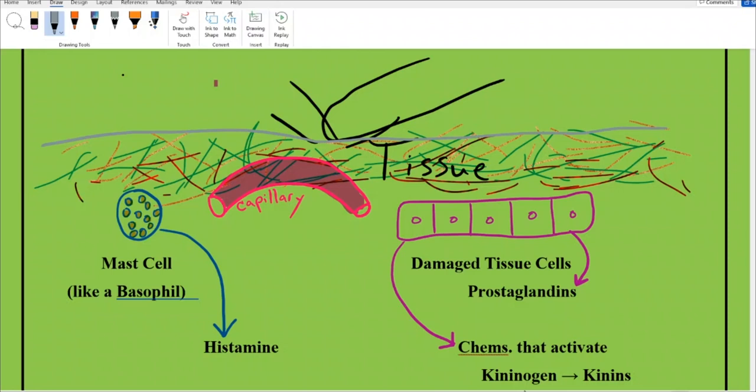When I get struck with this stick, that will irritate mast cells embedded in this tissue and cause damage to the cells. Let's first take a look at our mast cell. A mast cell embedded in my tissue is a lot like a basophil. It contains lots of little granules of histamine. When the mast cell gets irritated, it spits out histamine.